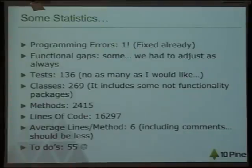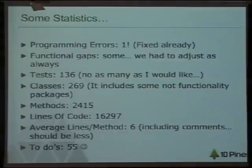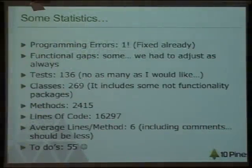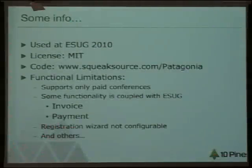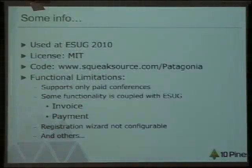I'm going to talk about some design issues, so that's why I'm going fast. Some statistics: we have one real error in production, some functional gaps, and there are not so many tests as I would like. There are some to-dos. It was used here for this conference. It has an MIT license. You can download it from QuickSource.